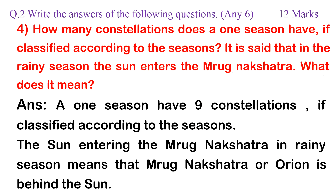Question 4: How many constellations does one season have, if classified according to the seasons? It is said that in the rainy season the sun enters the Mrugh-Nakshatra. What does it mean? Answer: One season has nine constellations. The sun entering the Mrugh-Nakshatra in the rainy season means that Mrugh-Nakshatra, or Orion, is behind the sun during the day.